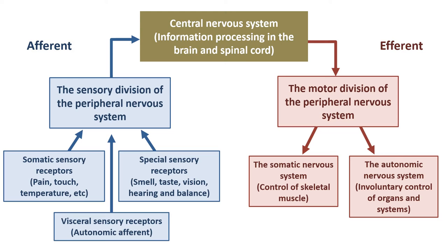We also have the efferent autonomic branch - this is the involuntary control of organs, glands, and systems. On the afferent side, our autonomic afferents were sending in information about the status of organs and glands. We then need an efferent pathway to respond to that and regulate it to adapt to different situations. So that's our afferent pathways - the sensory division - and our efferent pathways, which all come under the motor division.